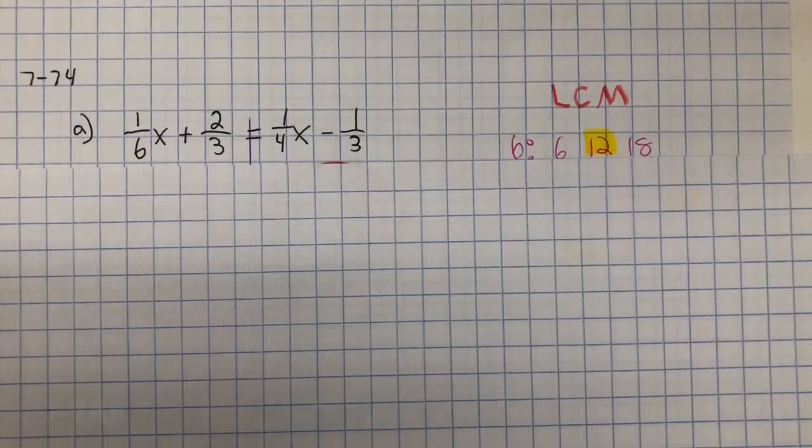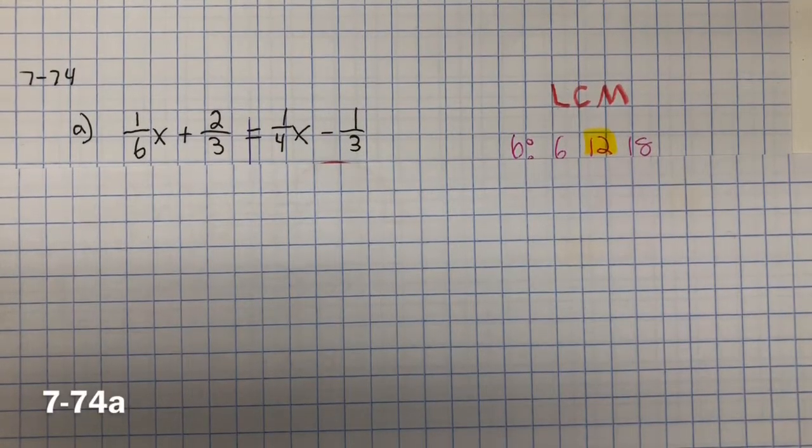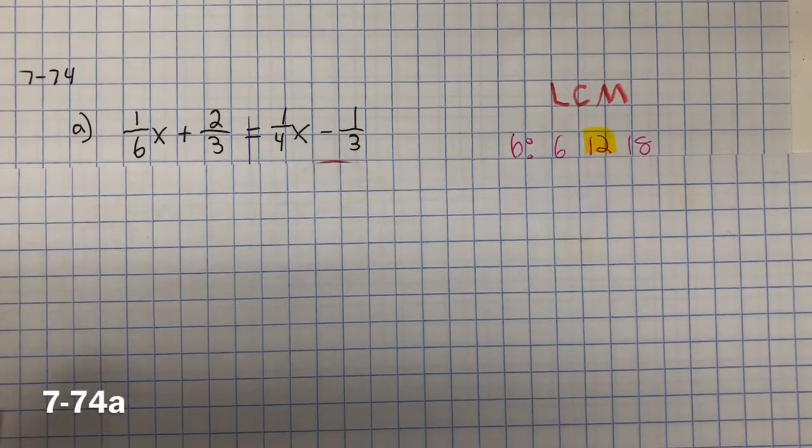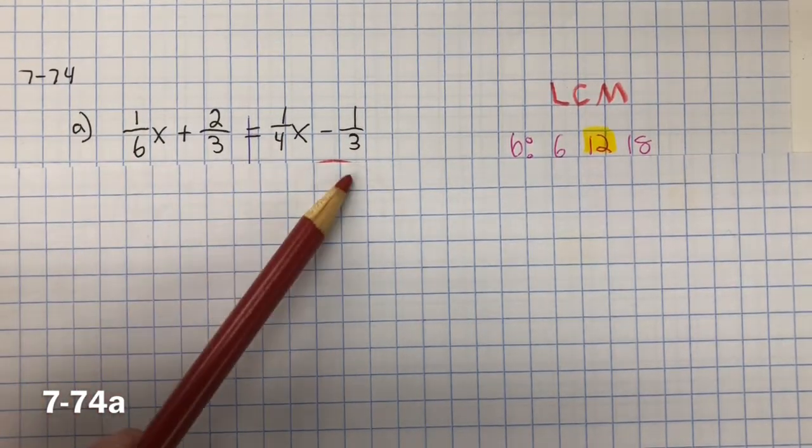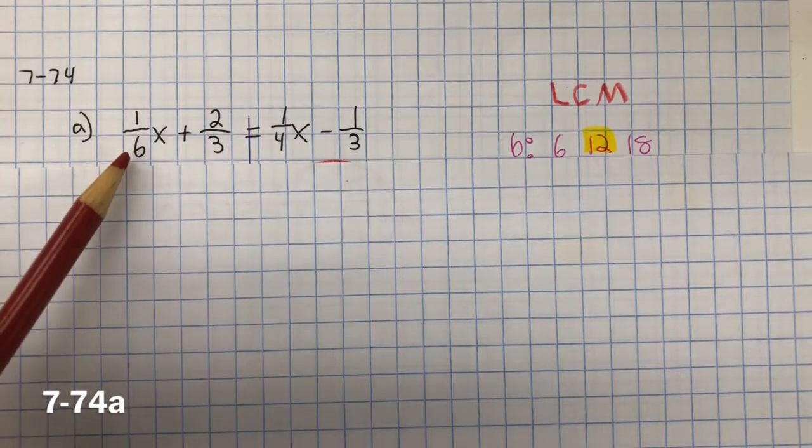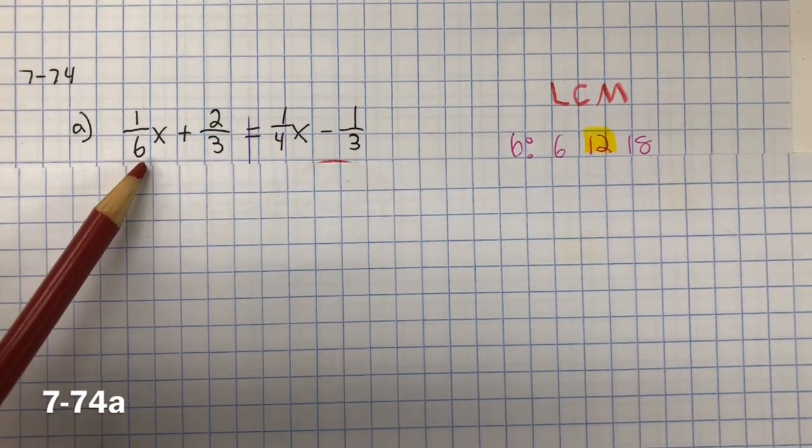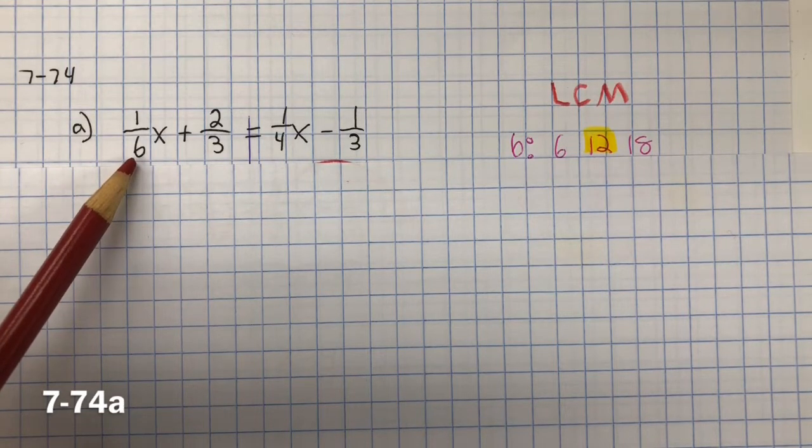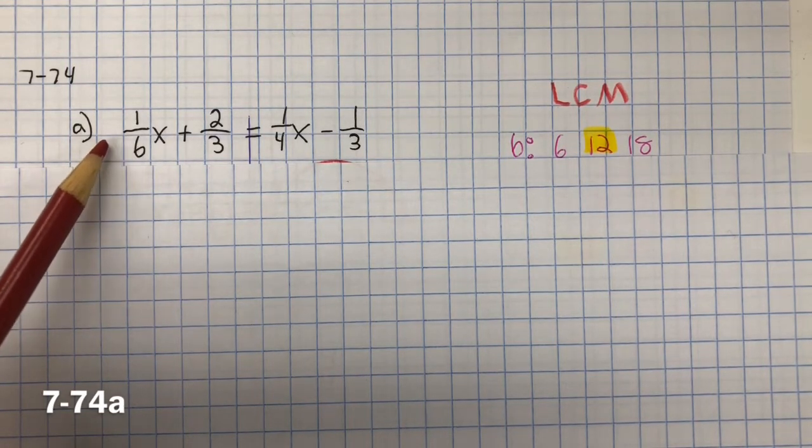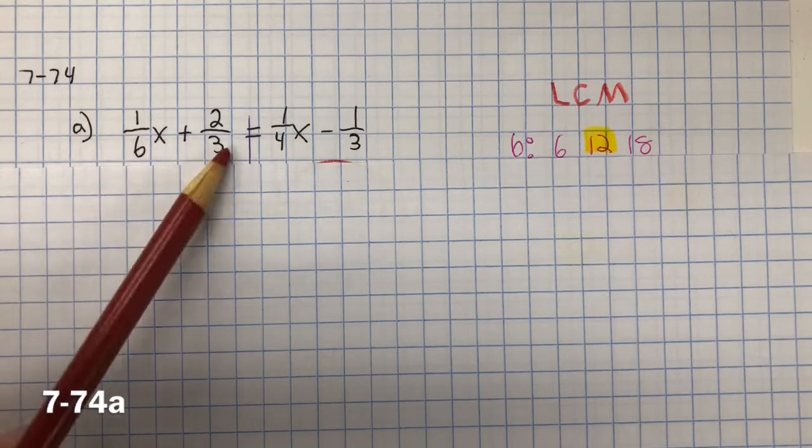Problem 7-74, you need to solve the following equations. For 74A, I have denominators in each term and I don't want to deal with denominators. So I'm going to use the fraction buster method. By using the fraction buster method, I can eliminate the denominators.